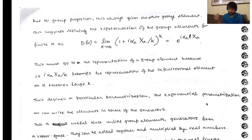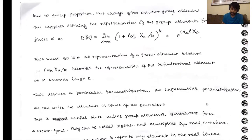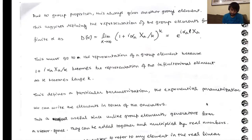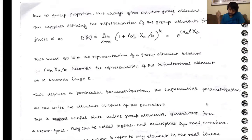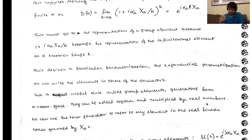This must go to the representation of a group element, because (1 + i alpha X_A / K) becomes the representation of the infinitesimal element as K becomes large. As K becomes large, this term becomes smaller and just goes to one. So this all works out well. This defines a particular parameterization, which we call the exponential parameterization. We can write the elements in terms of the generators.